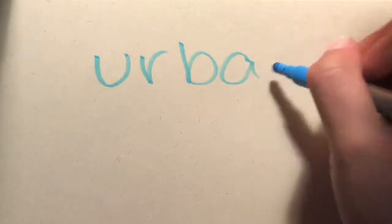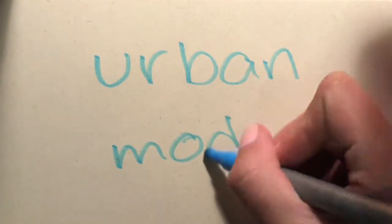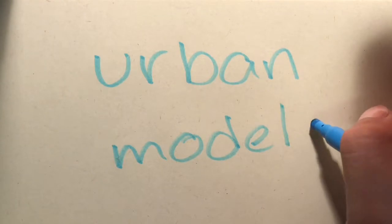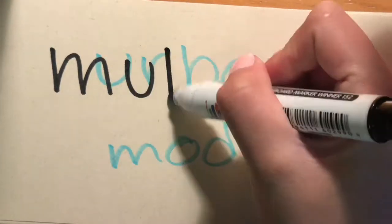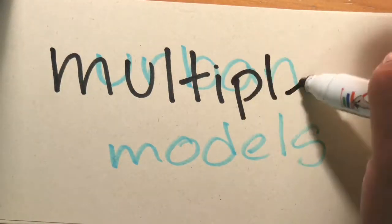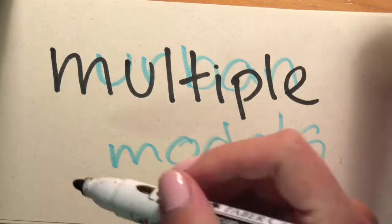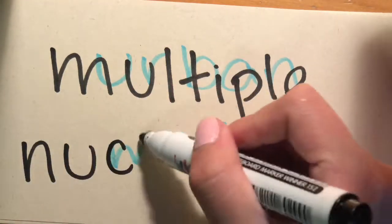Different cities develop different ways, but one thing they have in common is that they usually follow a certain urban model. Urban models are the way a city is organized, and each city has a different model depending on its initial development.